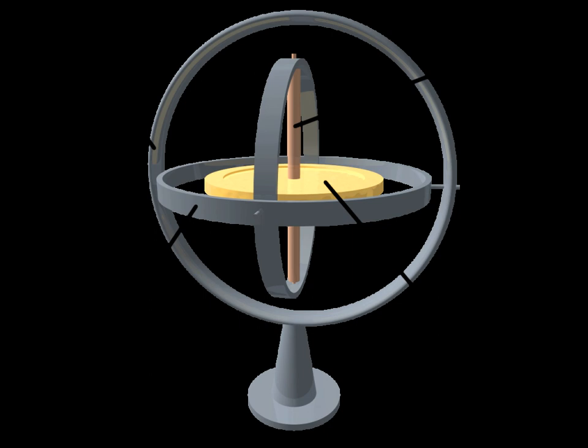Gyroscopes continue to be an engineering challenge. For example, the axle bearings have to be extremely accurate. A small amount of friction is deliberately introduced to the bearings, since otherwise an accuracy of better than 10^-7 of an inch would be required.